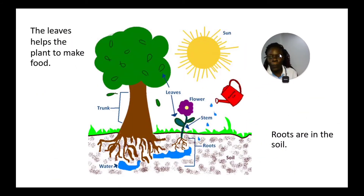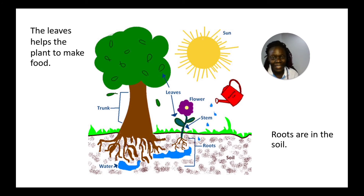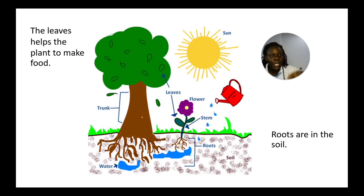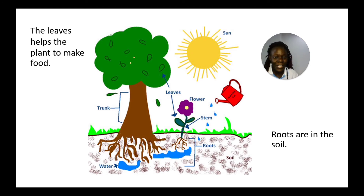The leaves help the plant make food during the process we call photosynthesis — they use the sun to make food. The roots absorb water into the plant, which is then used to make food.